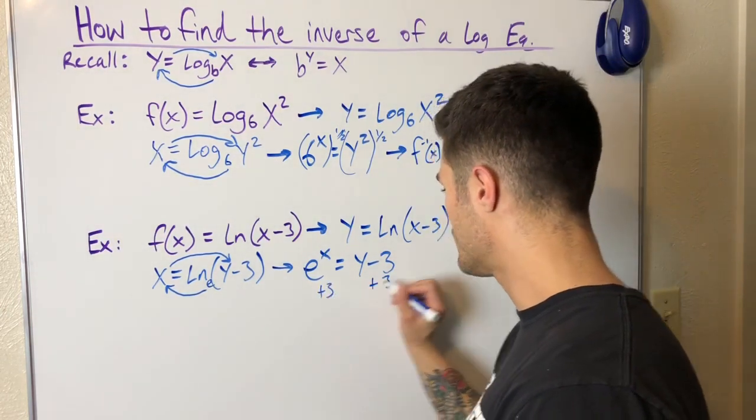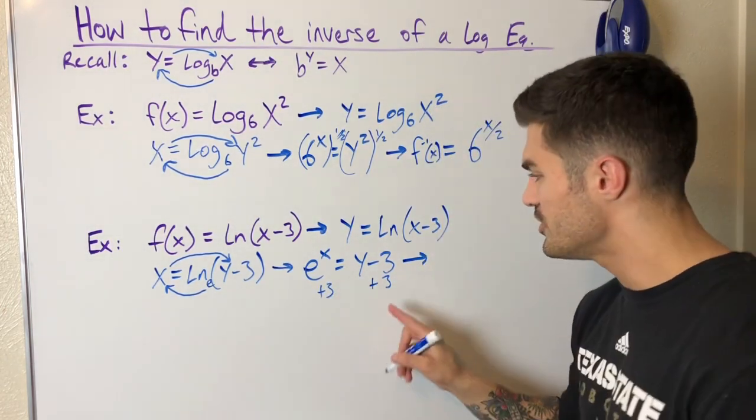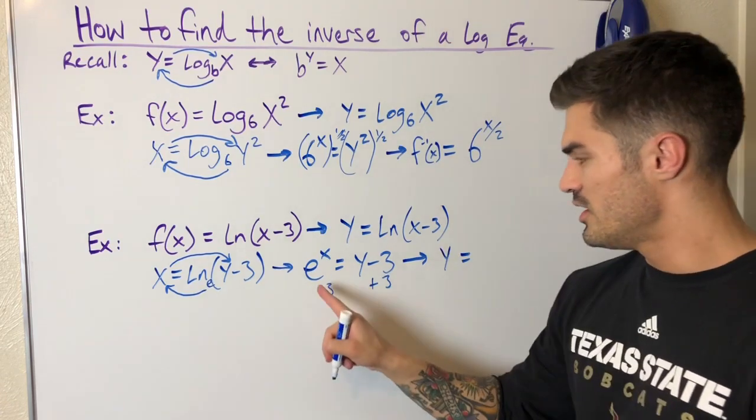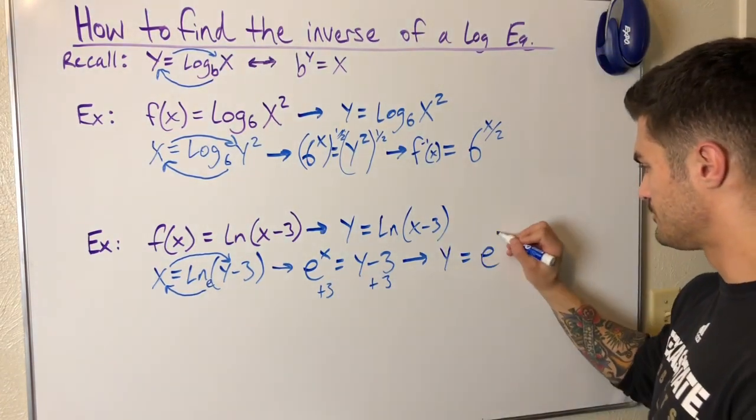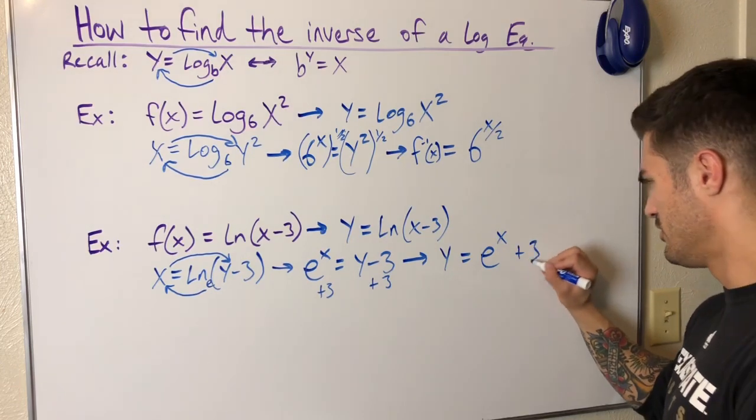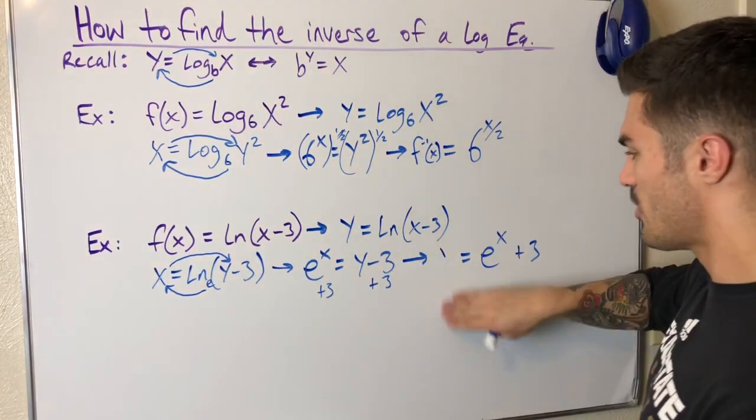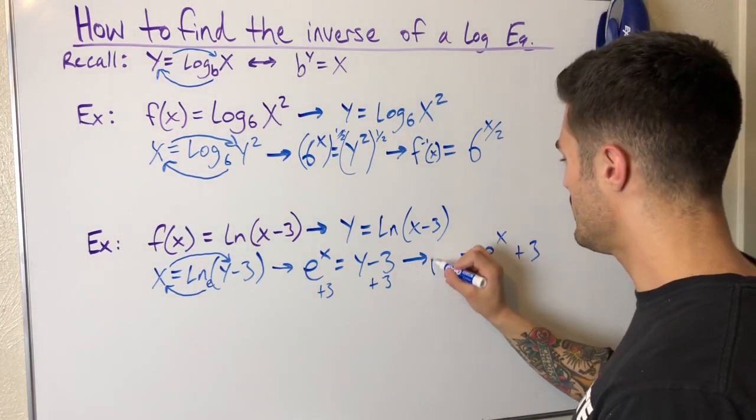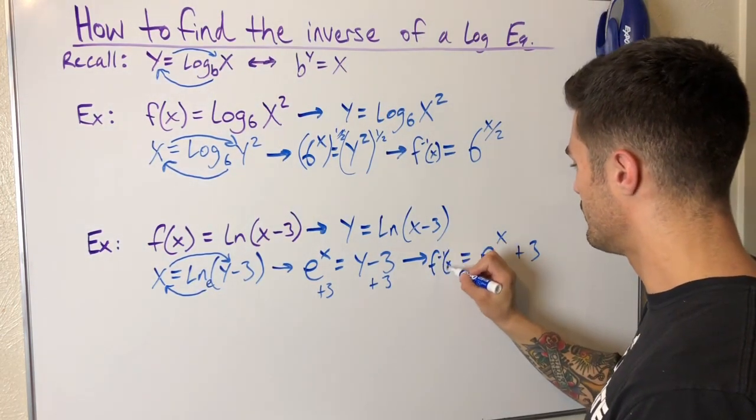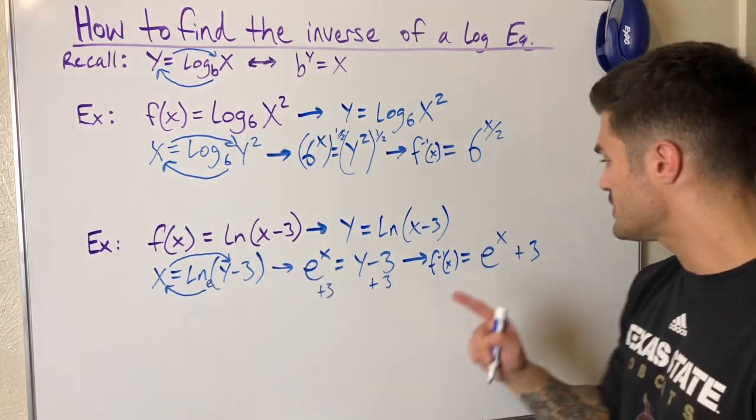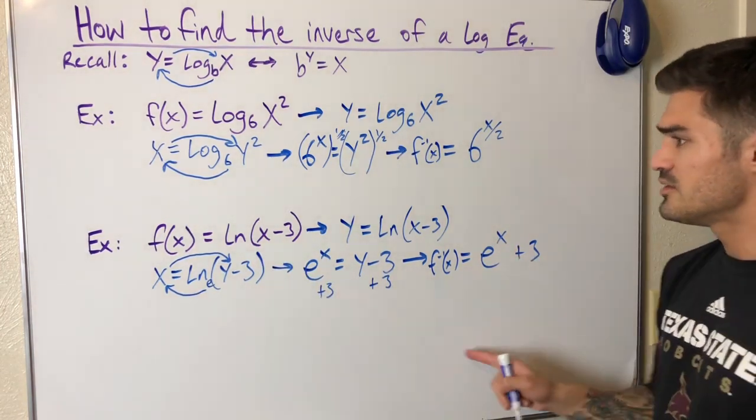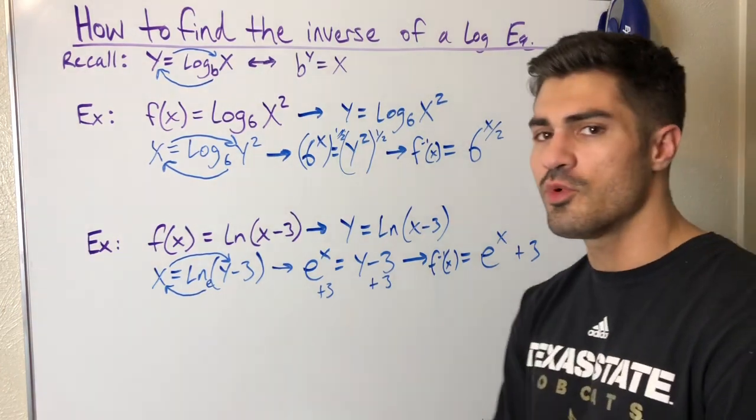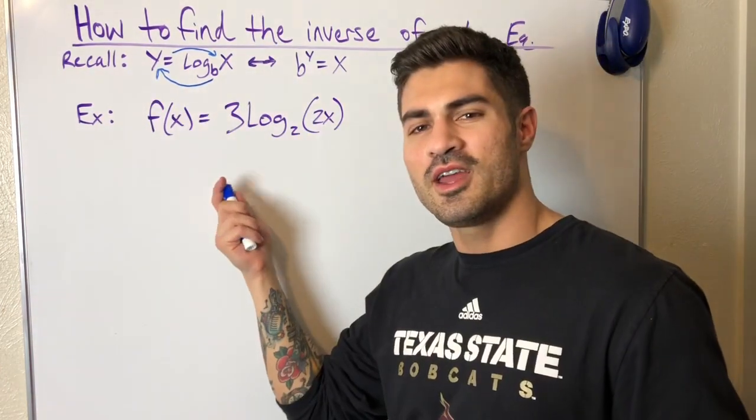Plus 3, plus 3. This becomes y equals e to the x plus 3. I'm going to replace my y with my inverse notation, and this is the inverse of my original function. I can plug this function into x here and I will get out x when I evaluate that. Let's do one more example. I encourage you to pause the video and try this on your own.